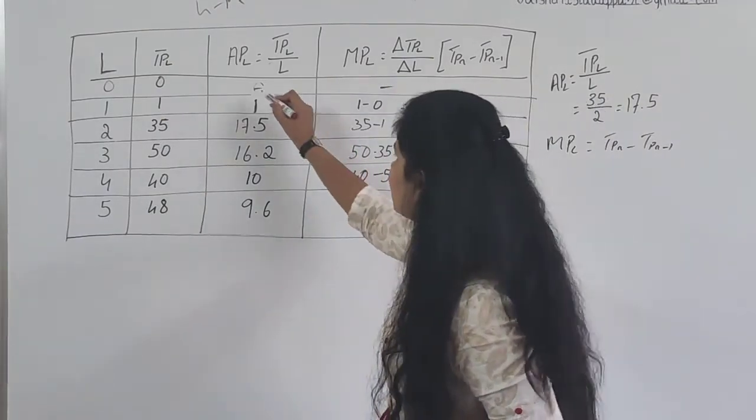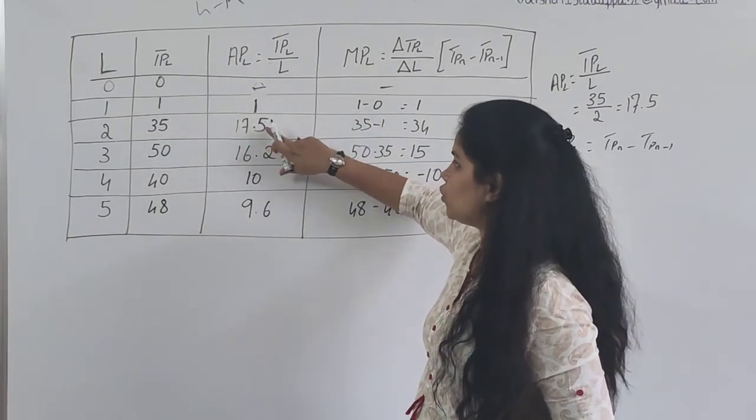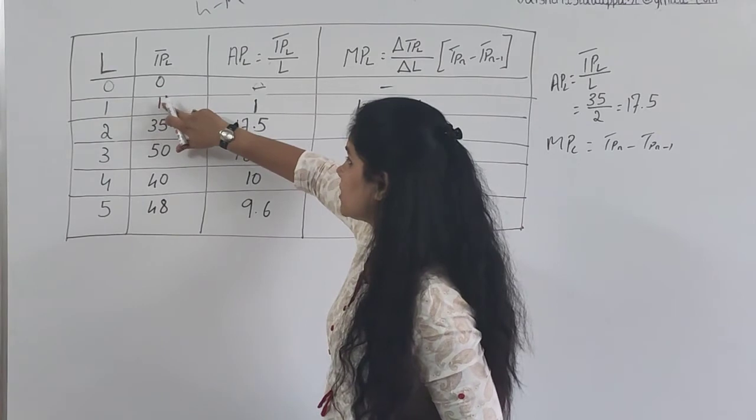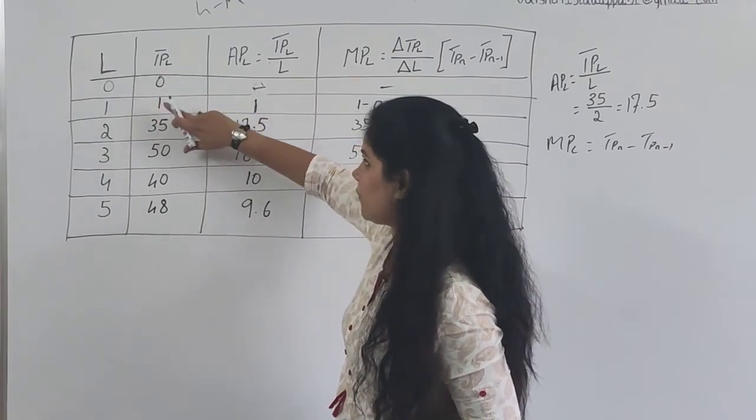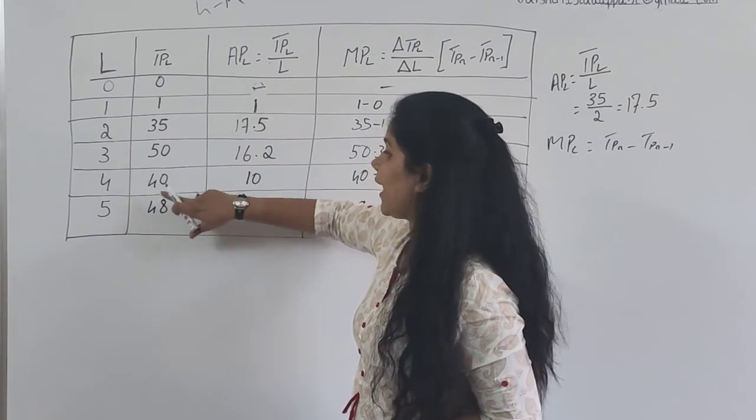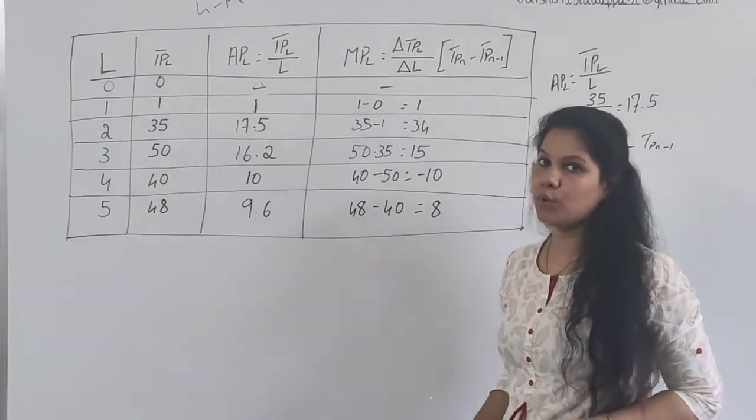To find out MPL, the easiest methodology is from the second number always subtract the first. You have to consider TPL. From the second number always subtract the first: 35 minus 1, 50 minus 35, 40 minus 50, 48 minus 40. This way you'll get the exact answer.